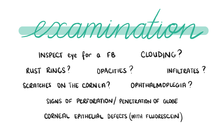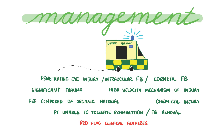Look for signs of perforation and penetration of the globe, which would require urgent ophthalmological assessment — for example dark material on the eye due to iris or choroid plugging the wound, pupil irregularities, or acute reduction in visual acuity. Then use fluorescent and blue light to look for corneal epithelial defects, which show up as staining to the abraded area, usually in linear or geographical shapes. Also assess eye movements, as ophthalmoplegia is another red flag sign. Some patients will need immediate referral to secondary care, for example in suspected penetrating eye injury or intraocular foreign body, or a corneal foreign body that cannot be removed in primary care.